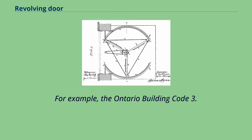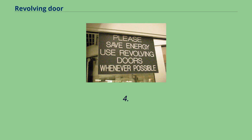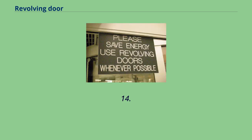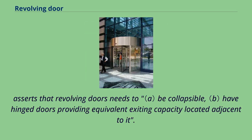For example, the Ontario Building Code section 3.4.6.14 asserts that revolving doors must be collapsible and have hinged doors providing equivalent exiting capacity located adjacent to them.